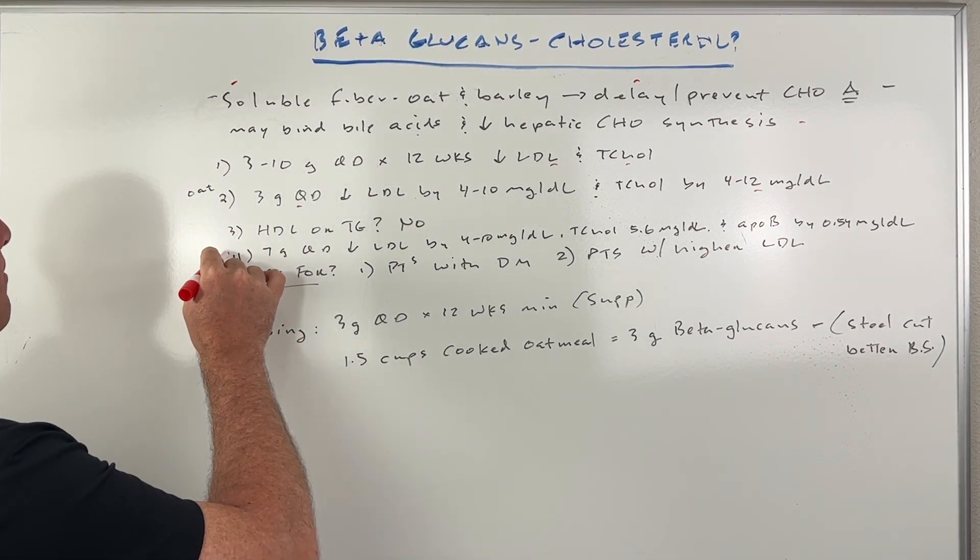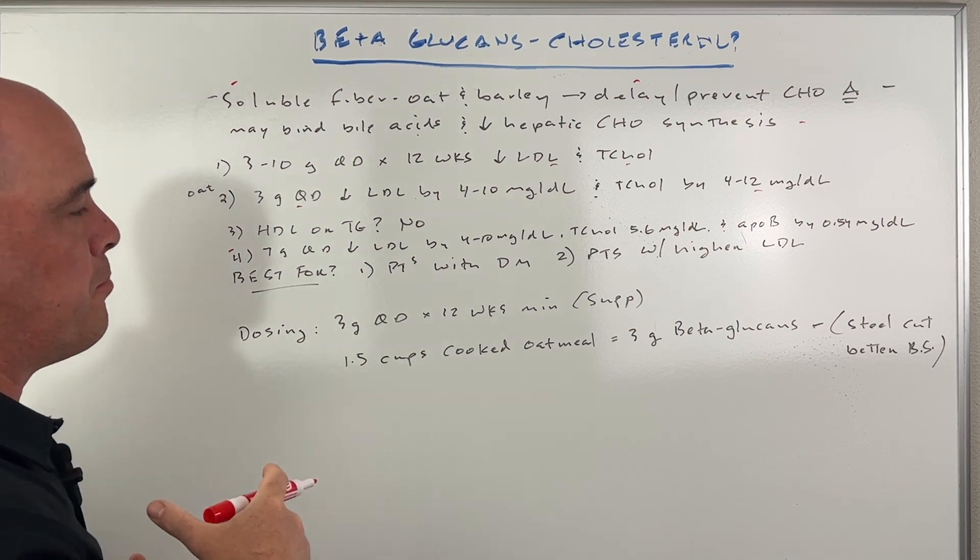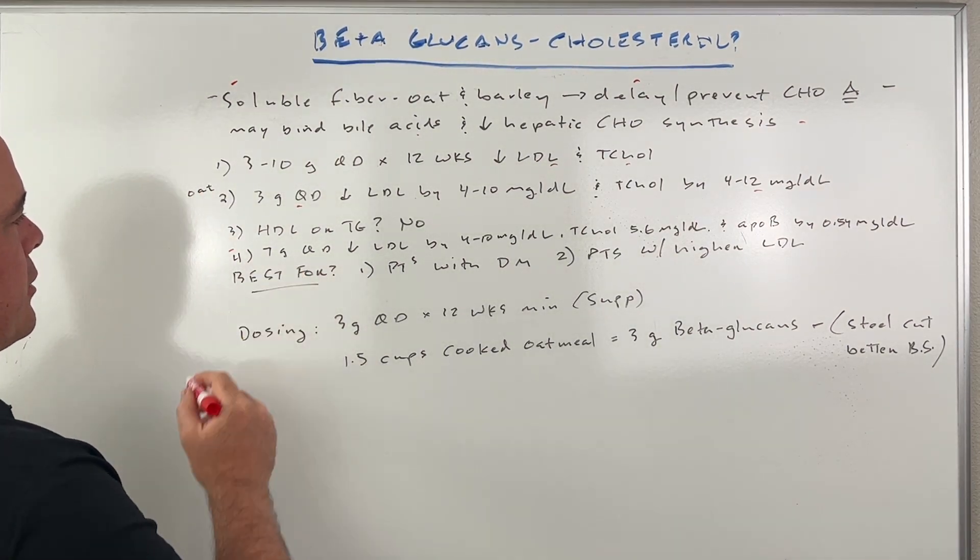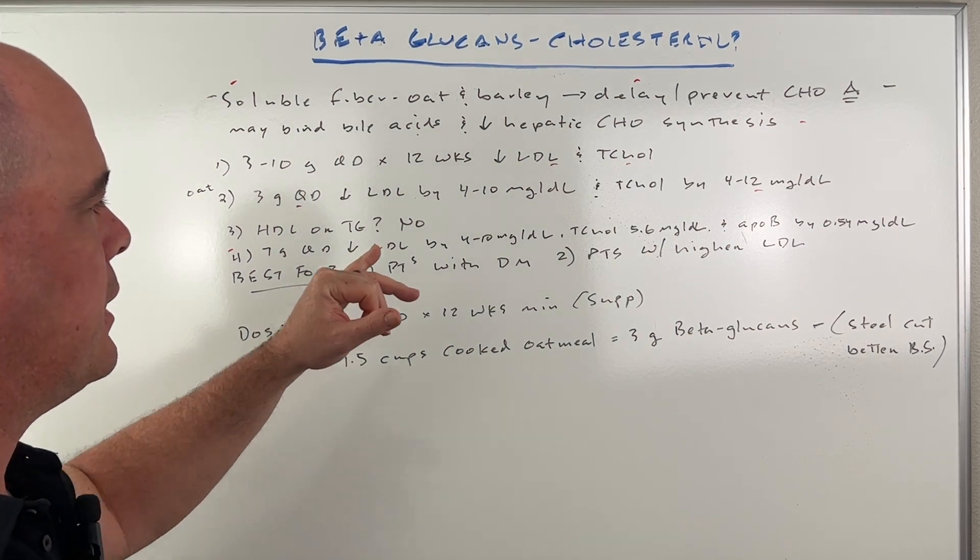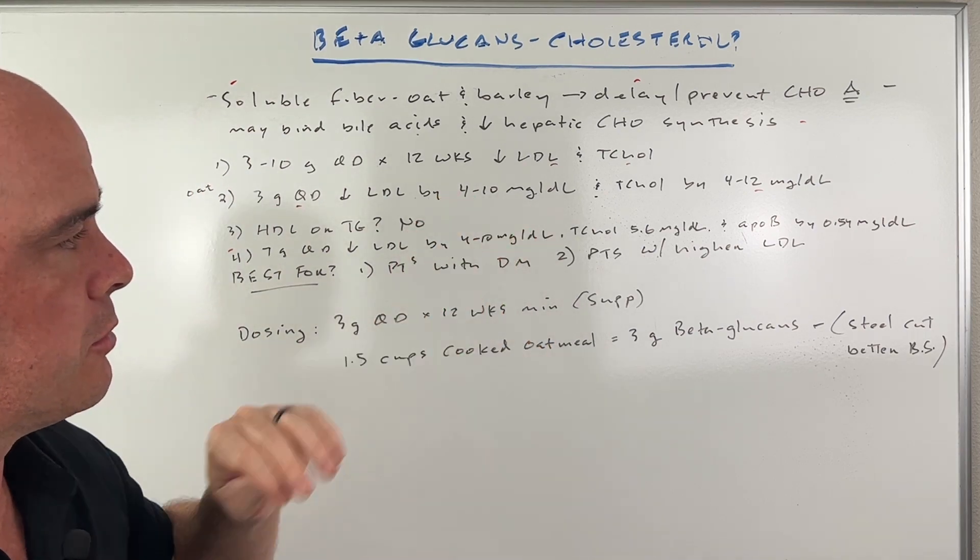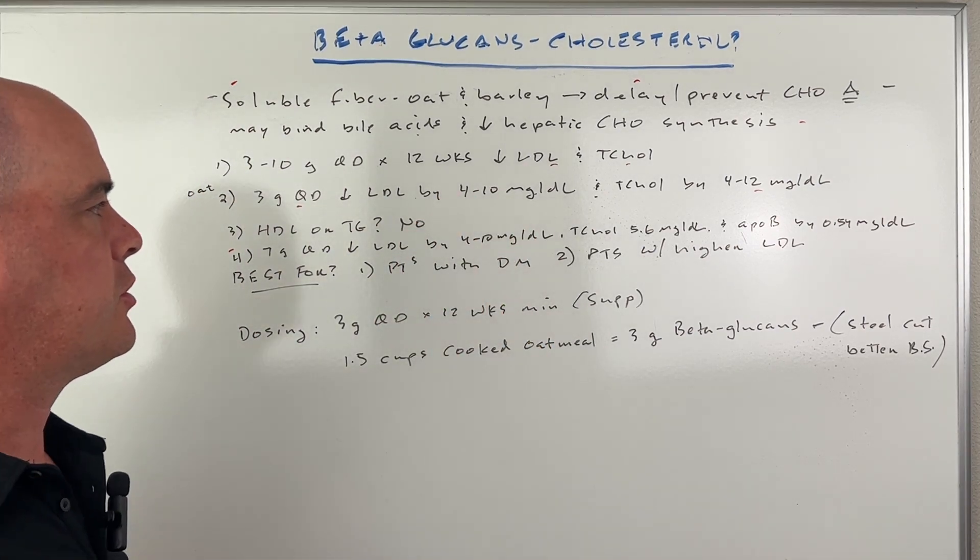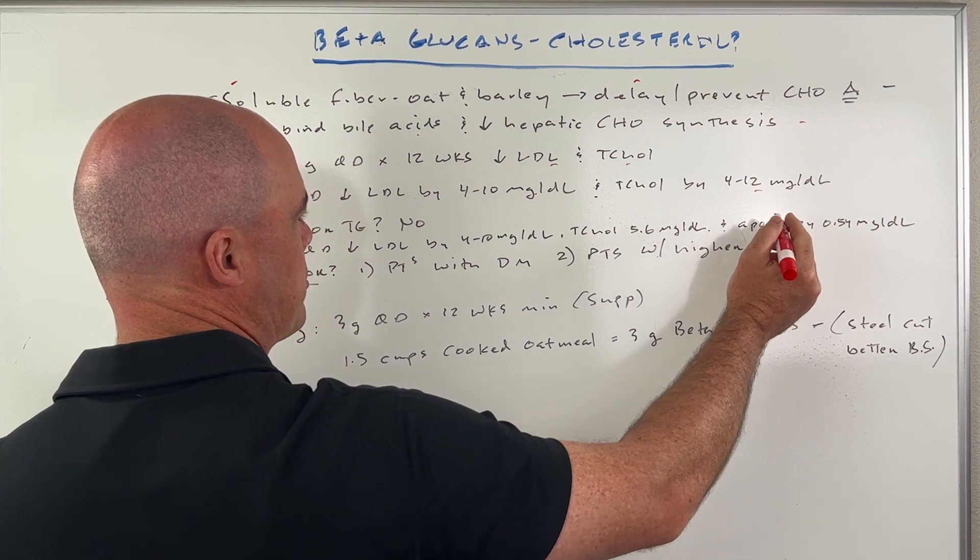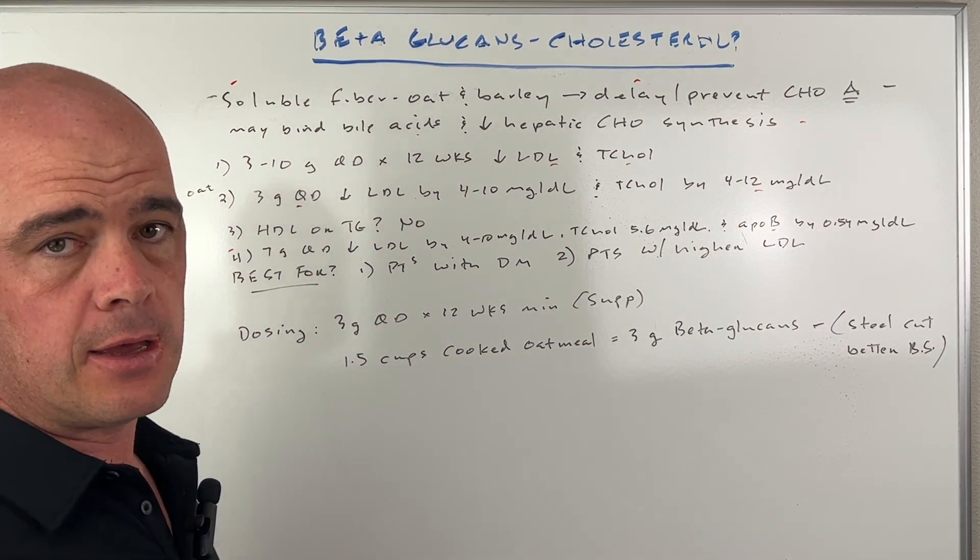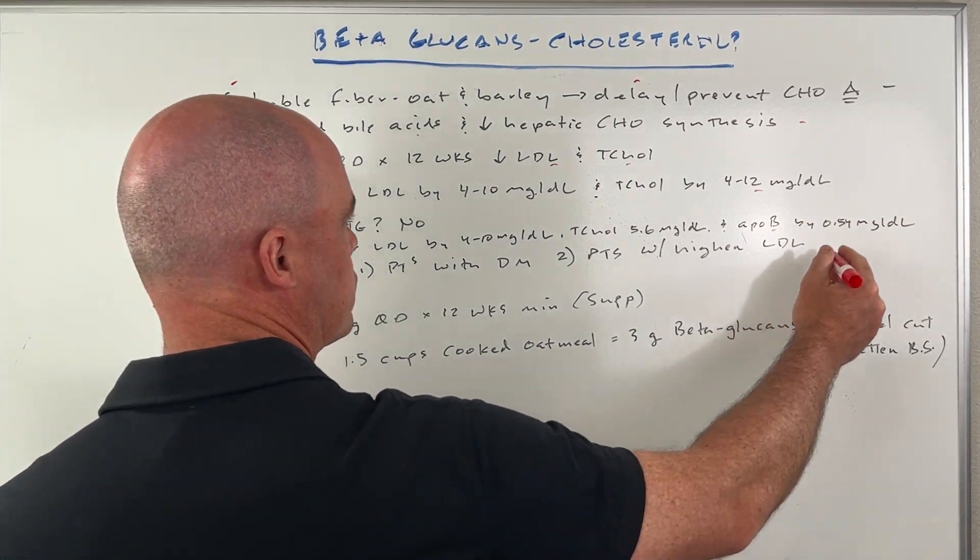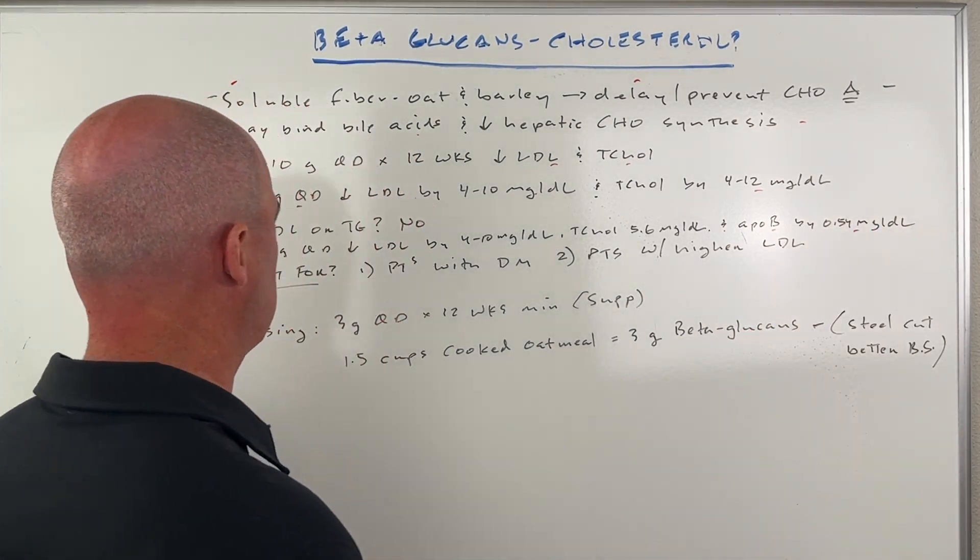Now they did do a study with more of a barley-based beta glucan and found the same thing. It was a little higher dose, seven grams per day. They did see an LDL drop of four to ten milligrams per deciliter, and a total cholesterol drop of 5.6 milligrams per deciliter. They also saw a drop in apolipoprotein B, which some people find important to know with the barley base.